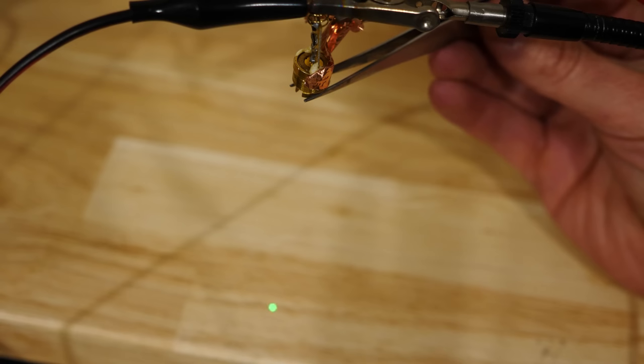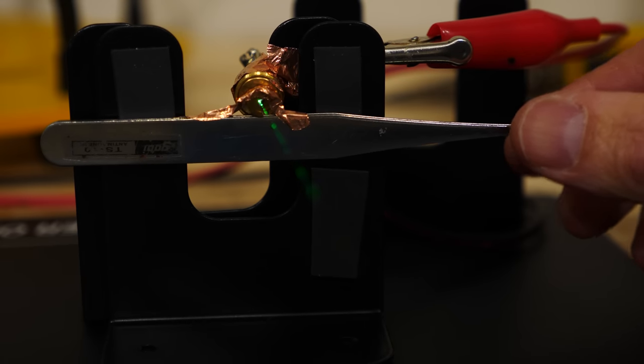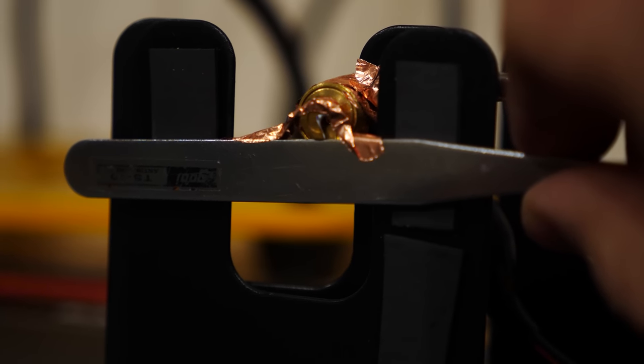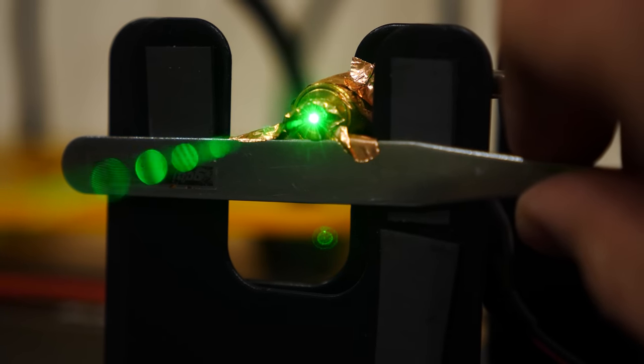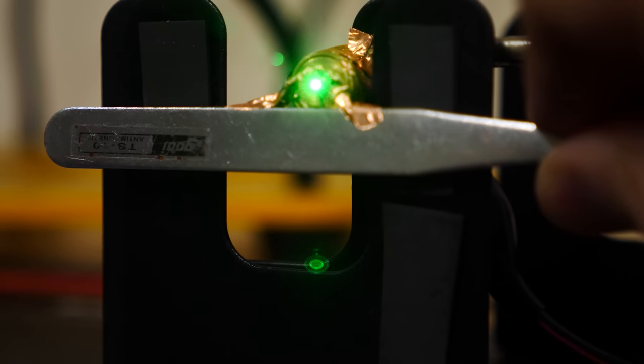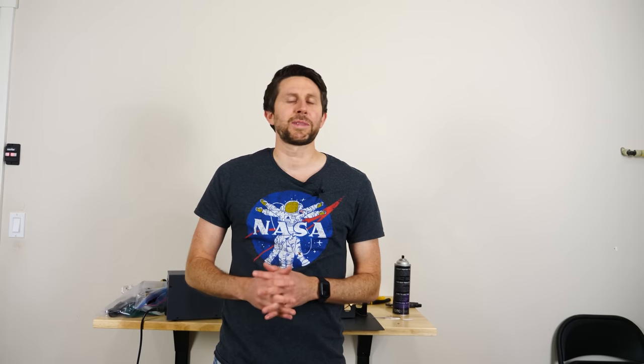So the way this actually works is first that 808 nanometer light gets turned into 1064 nanometer light, and then it goes through the nonlinear crystal. And that nonlinear crystal splits that wavelength up into 532 nanometer light. So it has exactly half the wavelength of the 1064 nanometer light going into the crystal.